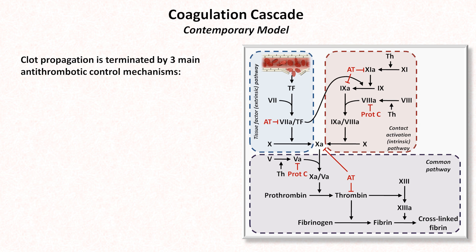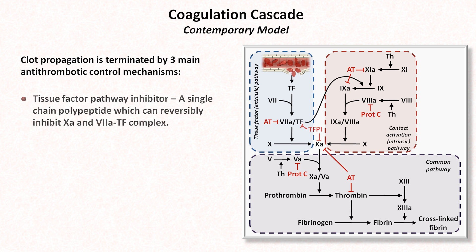The last antithrombotic control mechanism is tissue factor pathway inhibitor. This is a single-chain polypeptide which can reversibly inhibit factor 10, as well as the 7a–tissue factor complex. A small amount of tissue factor pathway inhibitor circulates in the bloodstream, while most is found attached to the microvascular endothelium.